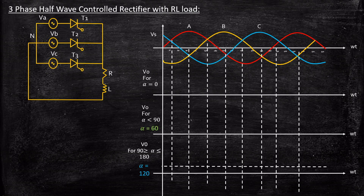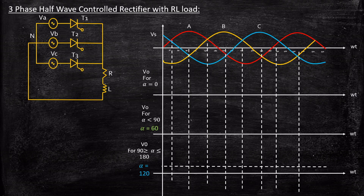Let's extrapolate these waveforms. An important observation from the previous video is that the thyristor will start conducting only after a minimum angle of 30 degrees. Before 30 degrees, if you're planning to trigger thyristor T1, then thyristors T2 and T3 will reverse-bias T1 and it will not be controllable. So any control can be achieved only after a minimum angle of 30 degrees. This means if alpha equals zero degrees, conduction will start at 30 degrees, not at zero.